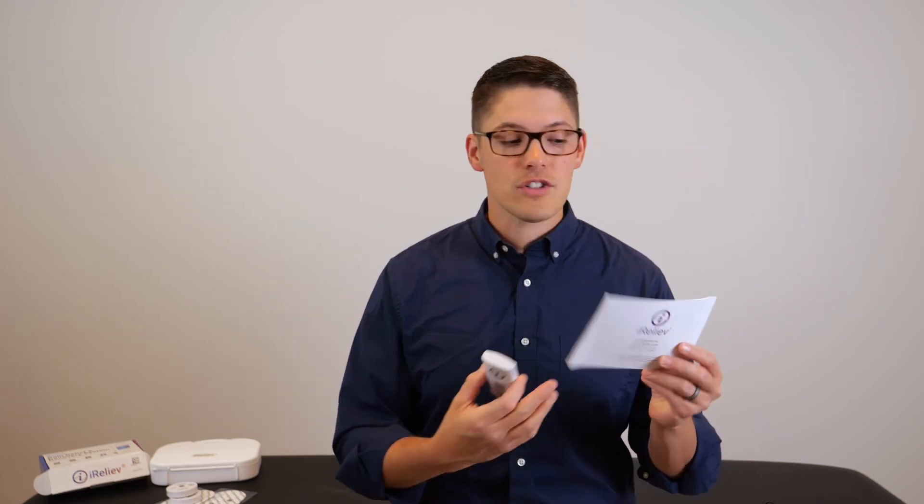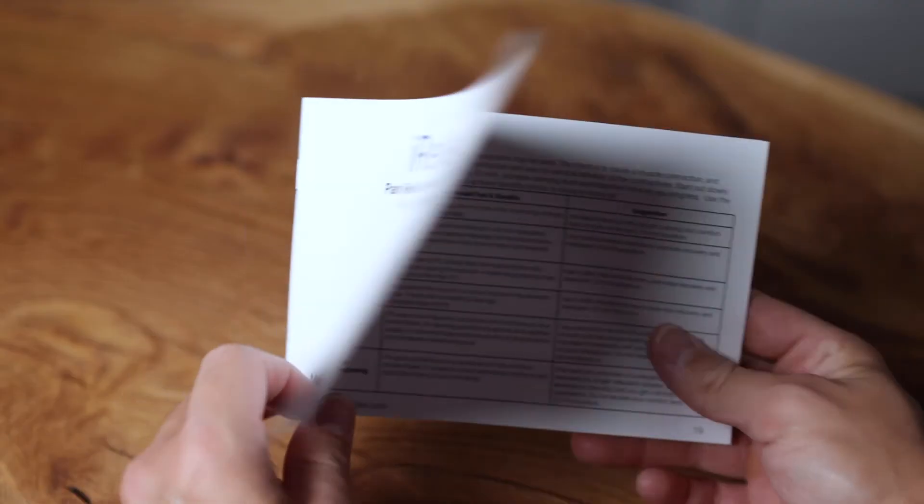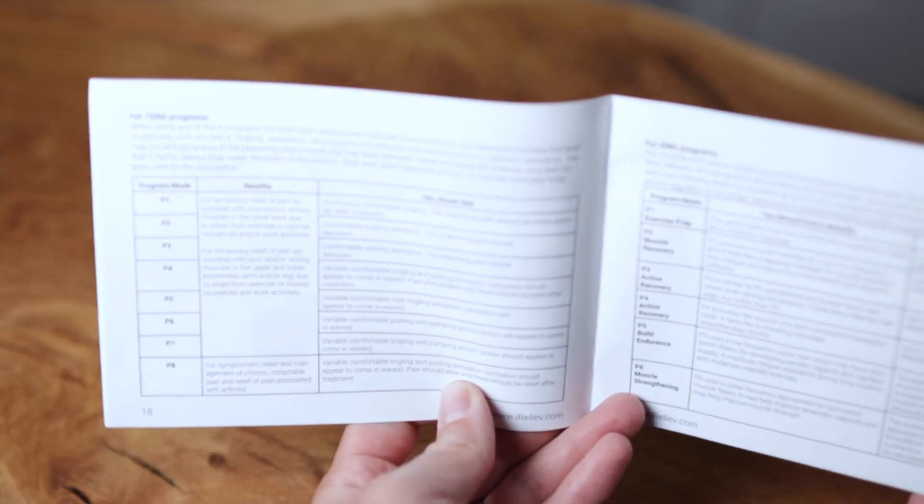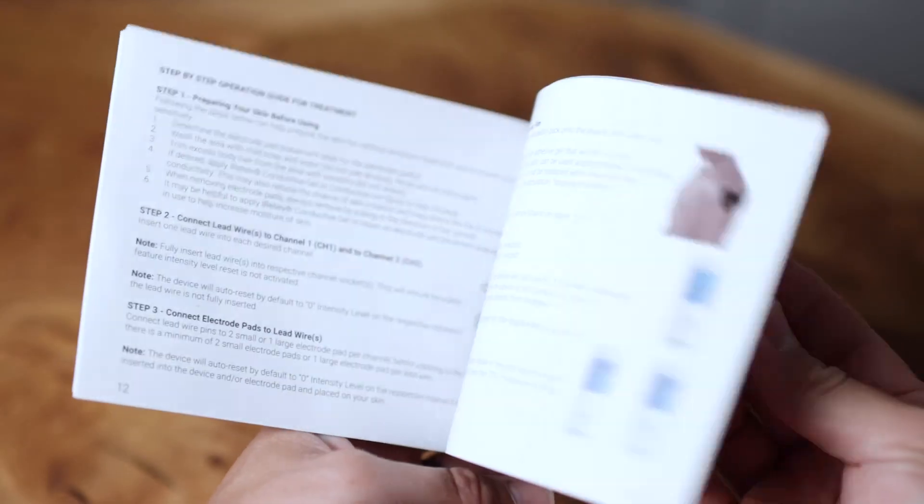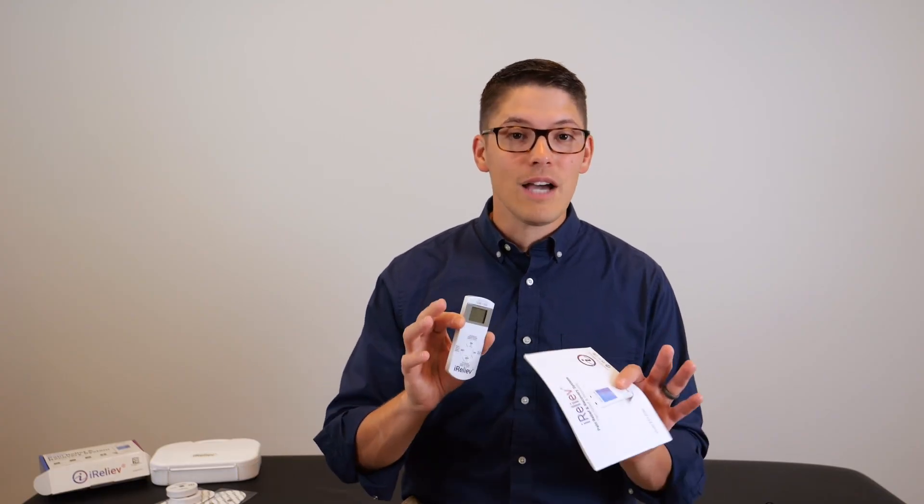Now, there are a lot of different settings on these units and one of the reasons I recommend the iReliev unit to my patients is because the instructions in the instruction manual are just so simple and easy to understand. They have helpful charts explaining each setting with clear recommendations on how to use the unit and I'll use more videos in the future to go into detail on how to use a unit like this for specific issues like back pain or shoulder pain. But now you just have a good idea of how to set up this unit and why you would want to use the TENS or select the EMS setting based on your goals to decrease pain or reduce swelling or even promote muscle recovery.